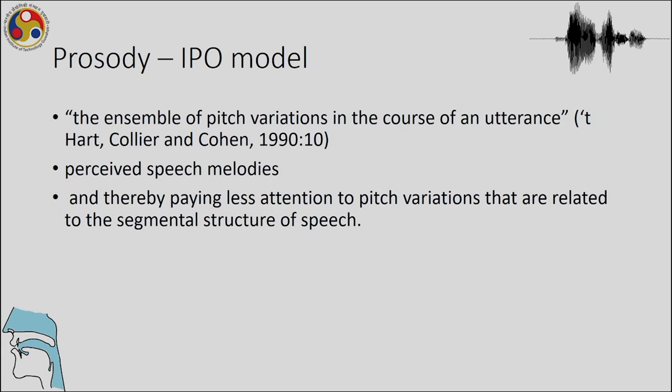In the IPO model, intonation is defined as the ensemble of pitch variations in the course of an utterance - capturing the continuous changes across an utterance. That is the difference between approaches: some talk about continuous changes, some use a categorical approach with distinct pitch accents, and some discuss relative differences as continuous changes in the utterance.